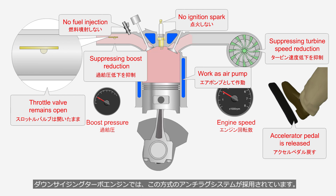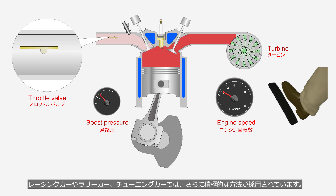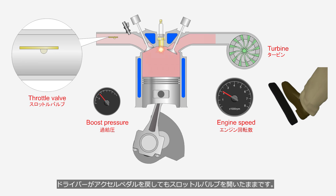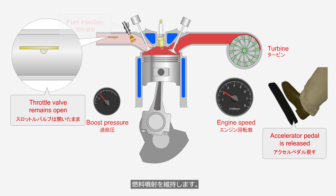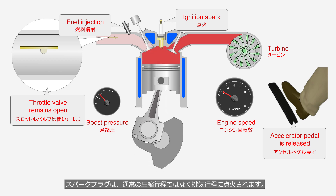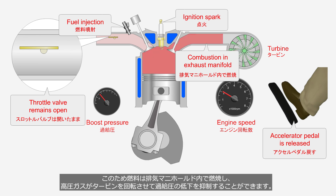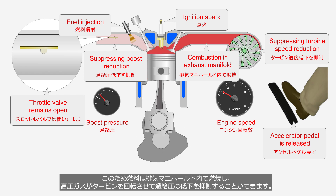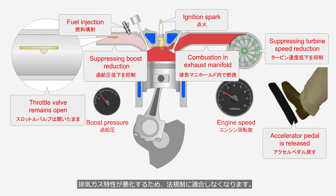Downsized turbocharged engines have adopted this method of anti-lag system. In racing cars, rally cars, and tune cars, even more proactive methods are adopted: the throttle valve remains open when the driver releases the accelerator pedal, fuel is injected, and the spark plug is ignited at the exhaust stroke rather than the usual compression stroke. Therefore, the fuel combusts within the exhaust manifold, and the high-pressure gases rotate the turbine wheel, suppressing the decrease in boost pressure. Due to deterioration in exhaust gas characteristics, this method does not comply with road regulations.